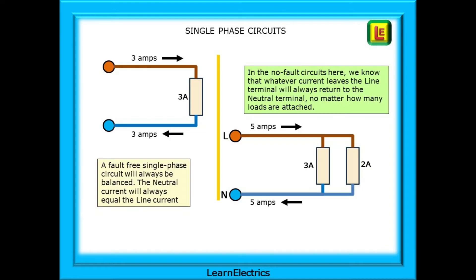We should begin by reminding ourselves about single-phase circuits. In the no-fault circuit shown here, we know that whatever current leaves the line terminal will always return to the neutral terminal, no matter how many loads are attached, and a fault-free single-phase circuit will always be balanced. The neutral current will always equal the line current. More on this soon, and we've left the earth or CPC off the drawings just for clarity.